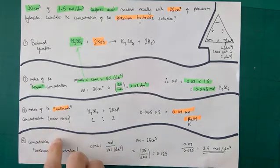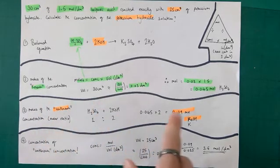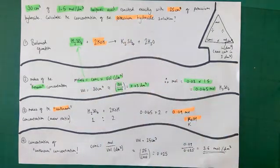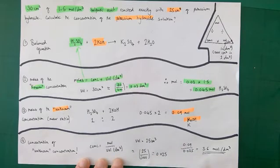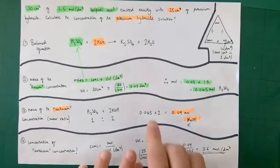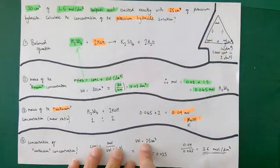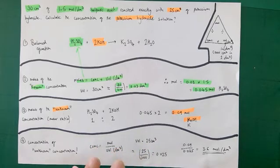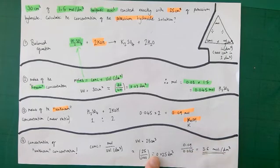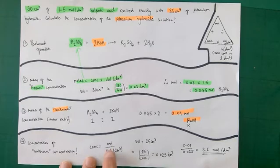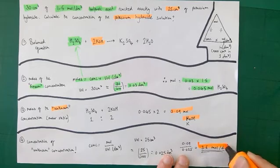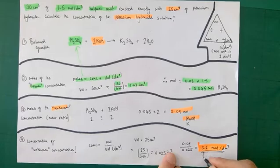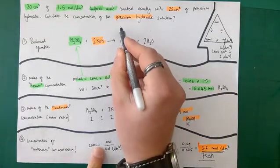Now I can work out the concentration of the potassium hydroxide. Concentration equals moles over volume in dm³. The volume of potassium hydroxide was 25 cm³; dividing by 1,000 gives 0.025 dm³. So concentration equals 0.09 divided by 0.025, which gives 3.6 mol per dm³ — that's the answer.